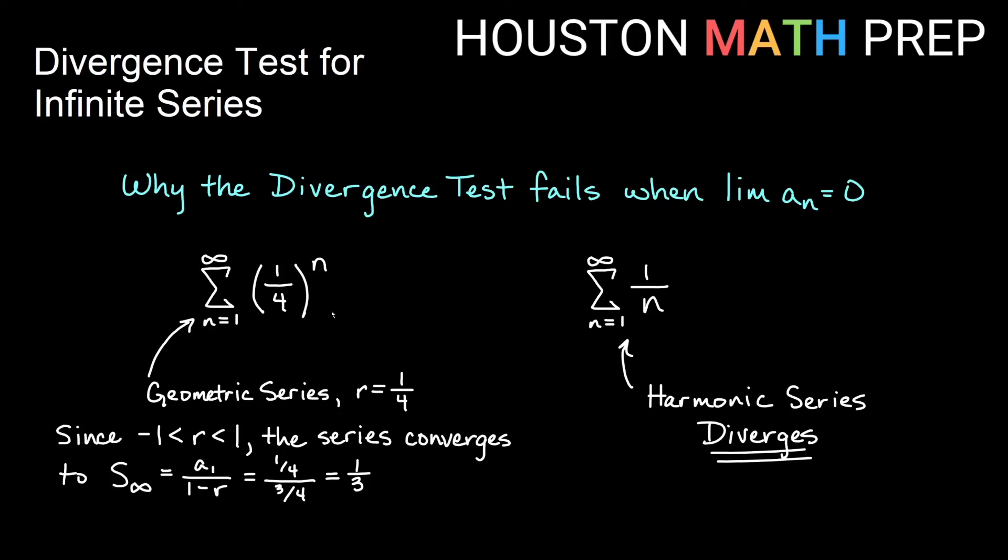So what do we have? Well, I have a geometric series with ratio 1 fourth and I have the harmonic series. If I look at the limit of these formulas, the limit of 1 fourth to the n is 0. The limit of 1 over n is 0. So the limit of the terms is both 0, but one of them converges and one of them diverges. So you can see with these two side by side why a limit of 0 does not tell us if it converges or diverges. The test is simply inconclusive when that happens and so we have to say that the test fails.